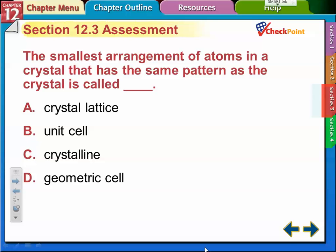So the smallest arrangement of atoms in a crystal has the same pattern as the whole crystal. We just said that a couple of seconds ago. That's the unit cell.